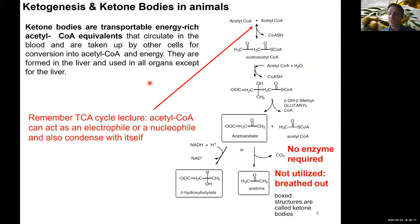What is really curious is that ketone bodies are actually formed in the liver and used by all organs, including the brain—they're small enough to pass the blood-brain barrier. But the only organ that cannot actually utilize them is the liver itself, even though it's the one making them. So the liver is actually missing out here.